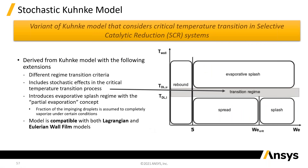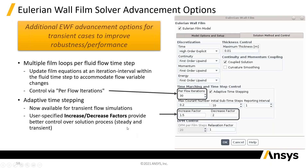When droplets interact with a wall, how they behave depends on the wall temperature — whether you're getting rebound, flash evaporation, or similar — and also on the particle velocity or Weber number. There's a new model that allows a transition zone rather than a hard switch between spread and flash evaporation or splash and evaporation, giving a more realistic model for such systems.